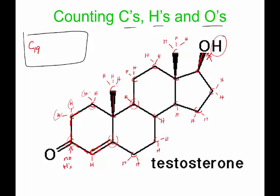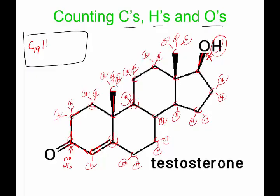Counting all the implied hydrogens across the nineteen carbons: there are twenty-eight hydrogens total. And then we have two oxygens. So the condensed molecular formula for testosterone works out from this skeleton structure by counting all visible and implied atoms.